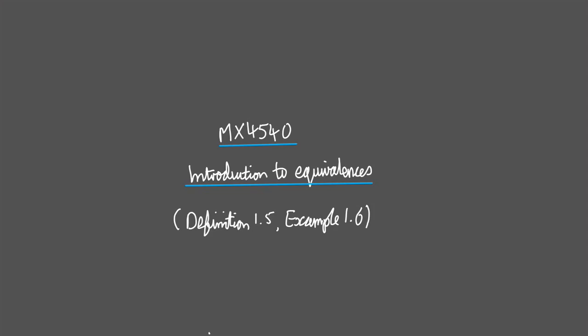Welcome everybody to a little mini lecture about equivalences. We say that two knots or links are equivalent if, roughly speaking, we can sort of deform one of the knots to obtain the other one. So equivalence is our notion of when two knots are the same and it's very important to understand it. The relevant definitions inside the notes are 1.5 and the relevant example is 1.6.